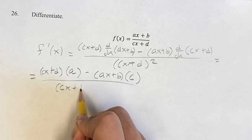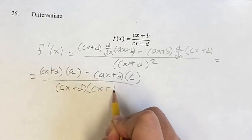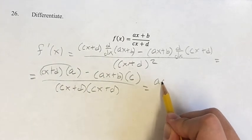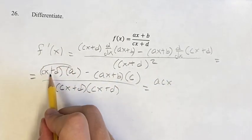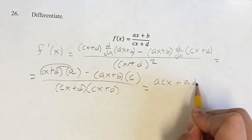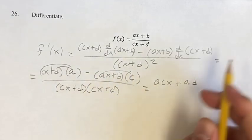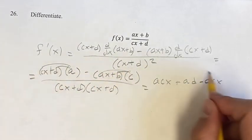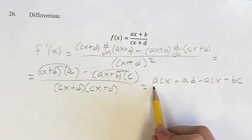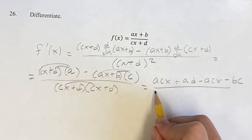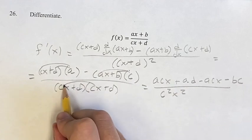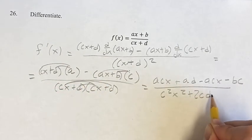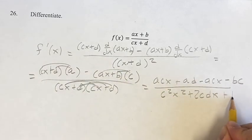So we have, over cx plus d squared, the expression: a times (cx plus d) minus (ax plus b) times c. Distributing out in the numerator, we have acx plus ad minus acx minus bc, all over (cx plus d) squared.